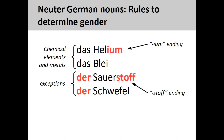Most of the chemical elements and metals are neuter, such as Helium, meaning helium, and Blei, meaning lead. Notable exceptions are nouns ending in -stoff, such as Sauerstoff meaning oxygen, and a few other elements and metals such as Schwefel, meaning sulfur. A good rule to follow is that if the noun ends in -ion, it will be neuter.